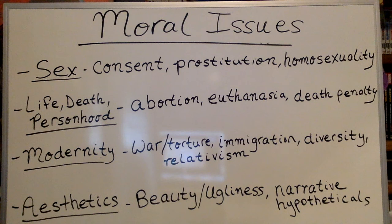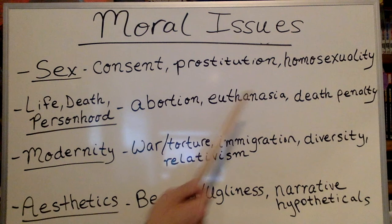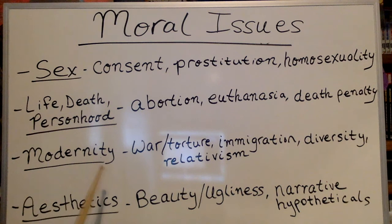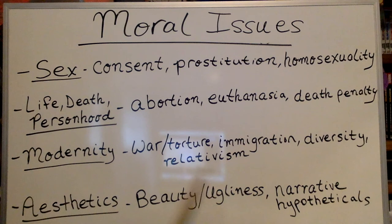The next section of the course is going to be about life, death, and personhood. We'll see some different arguments for and against abortion, euthanasia, and the death penalty, also referred to as capital punishment. Next up, we'll be looking at modernity. For the purpose of this class, when we're talking about moral issues relating to modernity, these are things that come about because the world is increasingly interconnected — whether it's because of the internet or the ability to travel more easily. There are new issues that come up, such as war and torture, immigration, diversity, and this idea of cultural relativism: different cultures have different ideas about what's right and wrong, and how much they should interfere with each other based on those relative moral ideas.